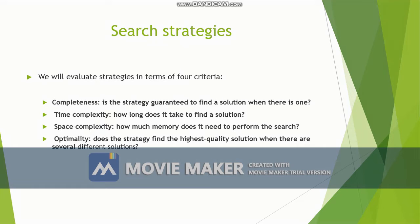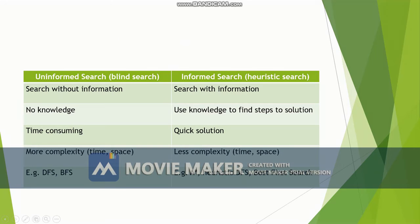Then space complexity — how much memory it needs to perform the search. Finally, optimality: there may be a situation where more than one solution is present to reach the goal state, but which solution is the best one? That is meant by optimality — does the strategy find the highest quality solution when there are several different solutions? So these are the four criteria.